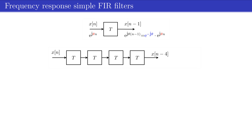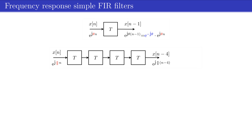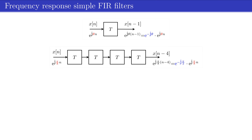When cascading four delays and using as input a phasor of frequency pi over 8, the output writes again as a product of two terms: a complex number, in blue, multiplied by a phasor with the same frequency as the frequency of the phasor at the input.